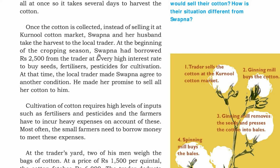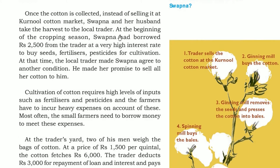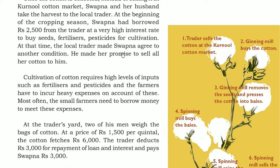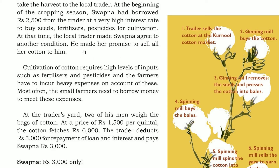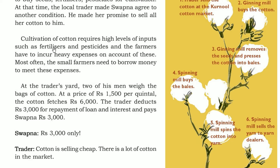Once the cotton is collected, instead of selling it to the Kurnool cotton market, Swapna and her husband take it to the local trader. Why? Because at the beginning of the cropping season, Swapna borrowed 2500 rupees at a very high interest rate in order to buy seeds, fertilizers, pesticides, and for cultivation. So the local trader put a condition that she must give him all the cotton she cultivates — this promise she has to keep. The cultivation of cotton requires high inputs of fertilizers and pesticides, and farmers incur high expenses.